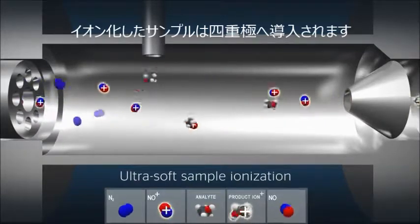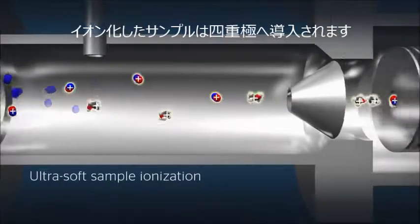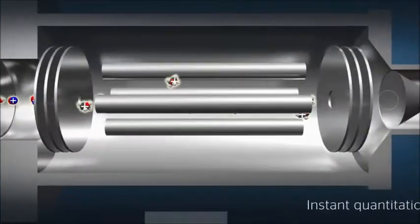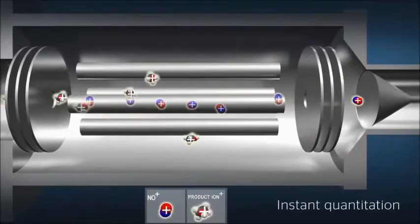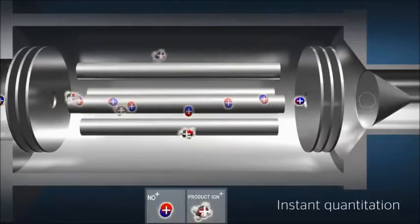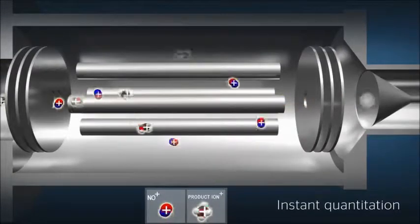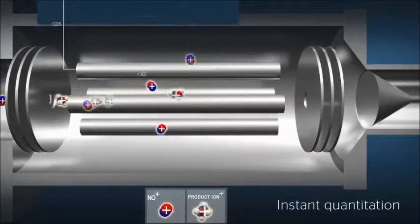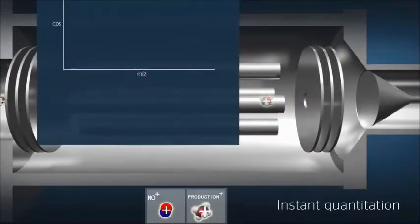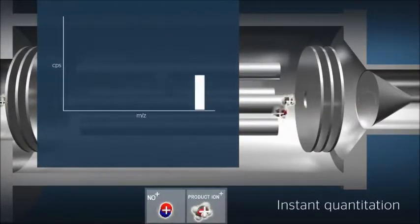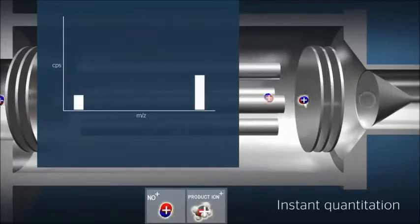At the exit of the flow tube, product and reagent ions are focused into a second quadrupole. All ions are transmitted in sequence to a detector and the resulting signal is recorded for each. This data is processed in real time with the chemical information in SIFT's extensive compound library.